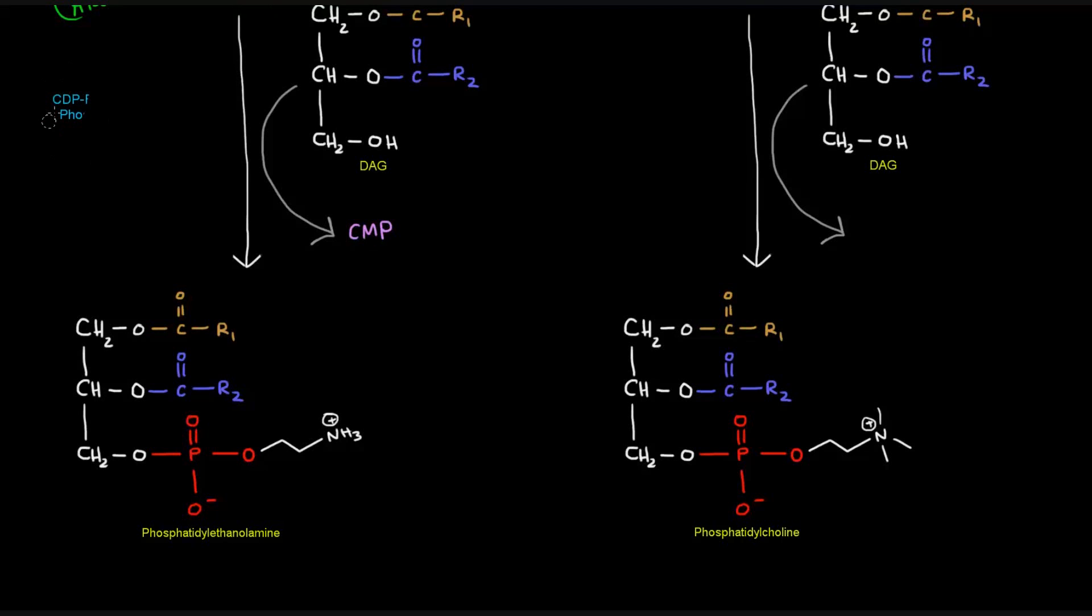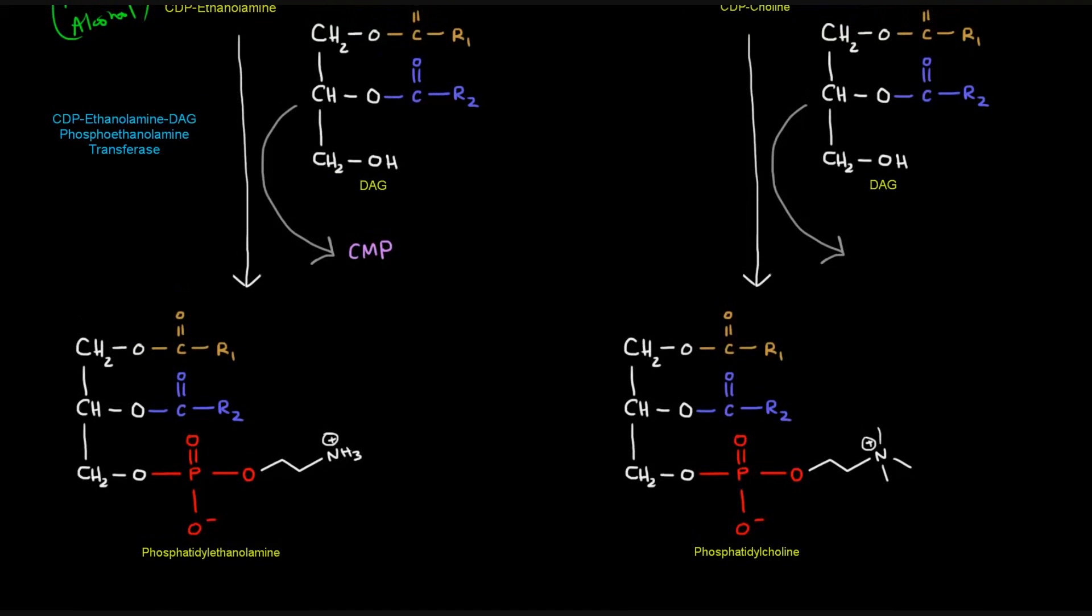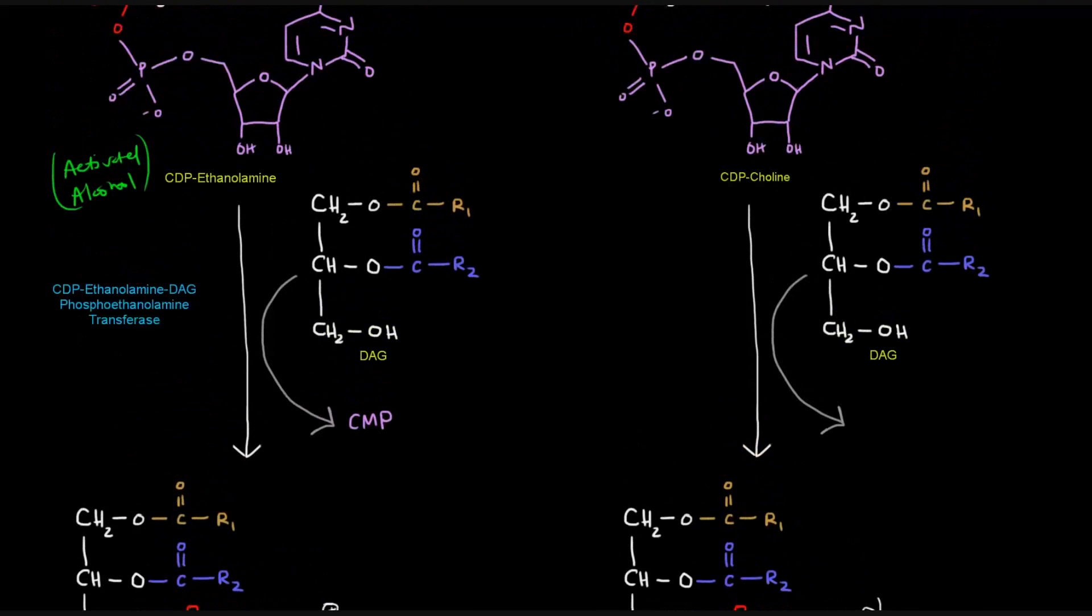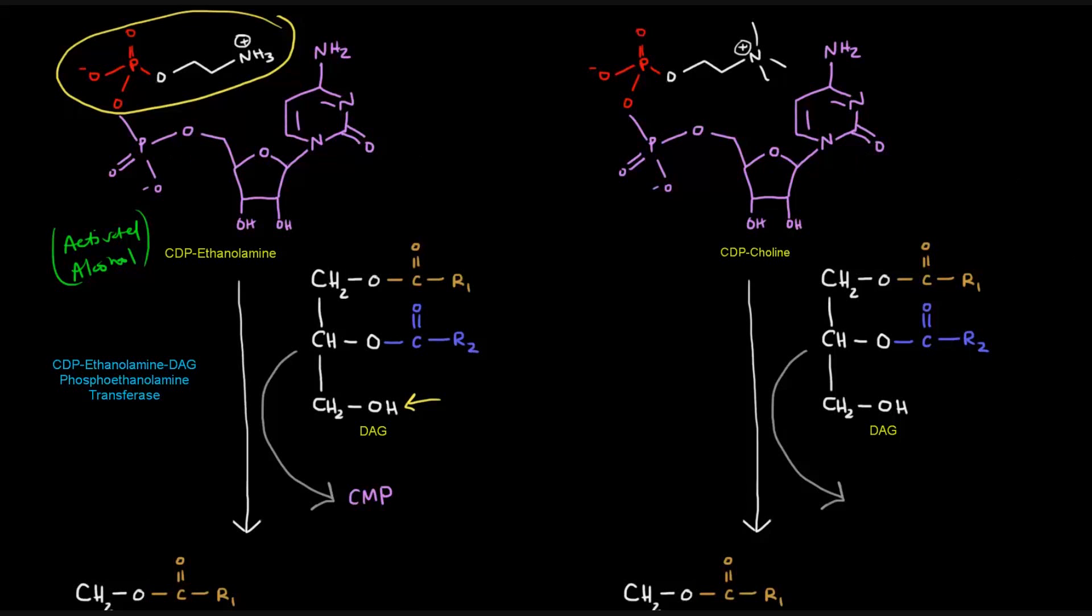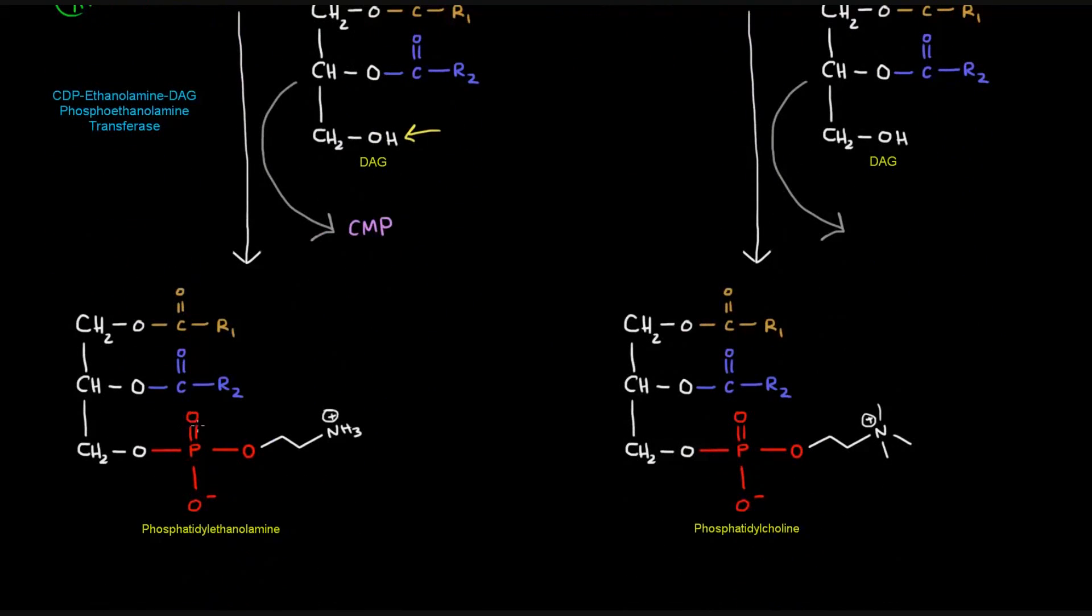That process is catalyzed by CDP-ethanolamine, diacylglycerol, phosphoethanolamine, transferase. Again, a mouthful. But, that should make a little bit of sense. We're talking about an interaction between CDP-ethanolamine and DAG, so that's where that part comes from, phosphoethanolamine transferase. We're just transferring this phosphoethanolamine portion over, we're basically just taking this part of the molecule, and we're putting it here. We're just putting it right there. And then the CMP portion leaves. And so, that gives us phosphatidylethanolamine.